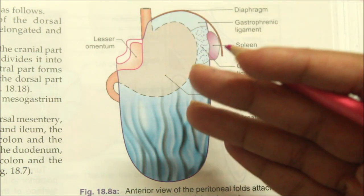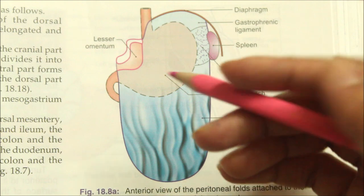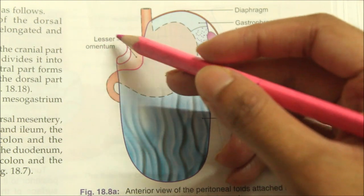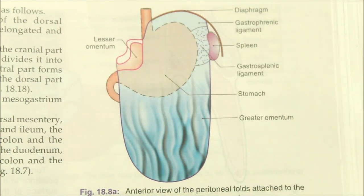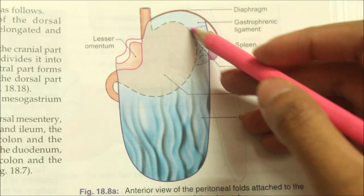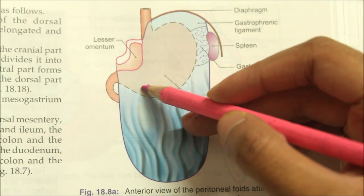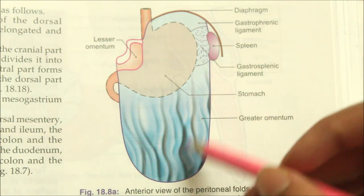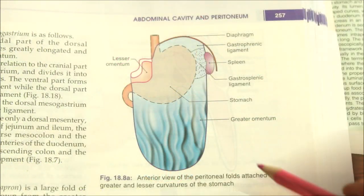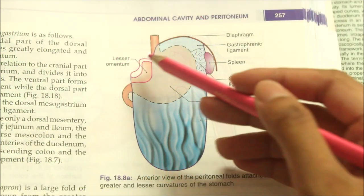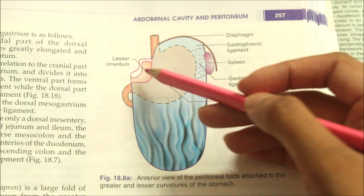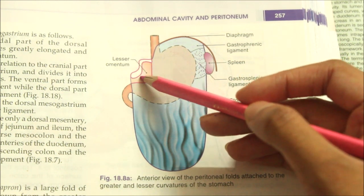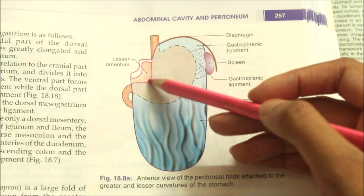Along the greater curvature of the stomach, the two layers meet to form the greater omentum. The lesser omentum is a fold of peritoneum which extends from the lesser curvature of the stomach and the first two centimeters of the duodenum to the liver. The greater omentum is a large fold of peritoneum which hangs down from the greater curvature like an apron, covering the loops of intestines.